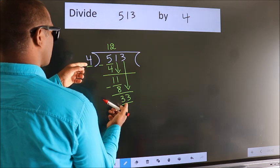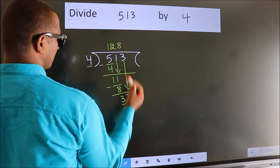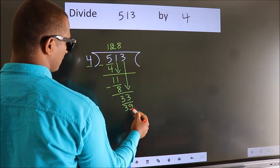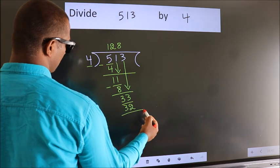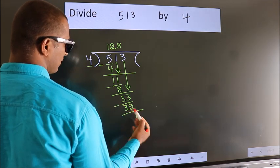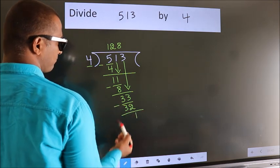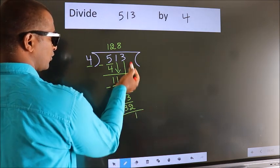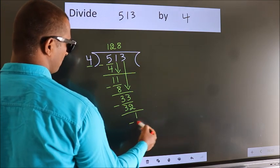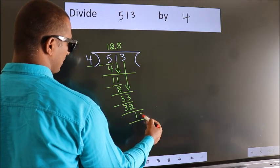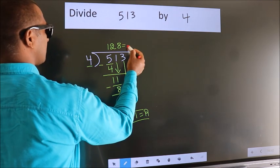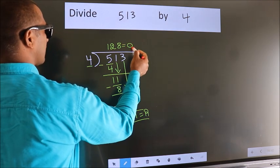So we have 33. A number close to 33 in the 4 times table is 4 eights — 32. Now we subtract, we get 1. There are no more numbers to bring down, so we stop here. This is our remainder, and this is our quotient.